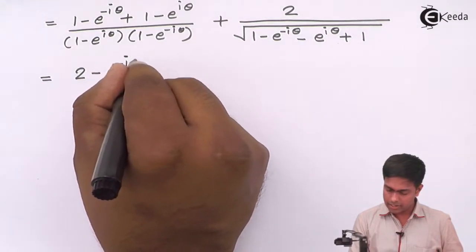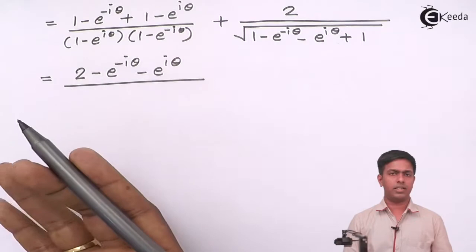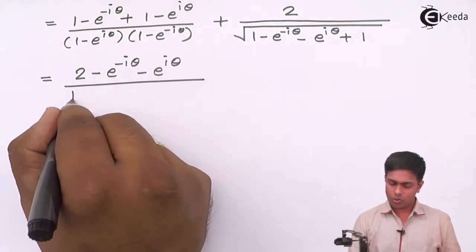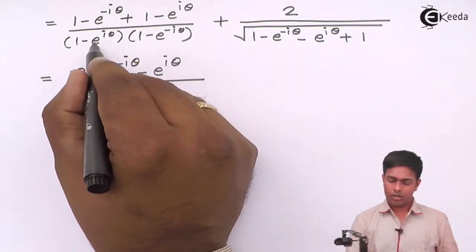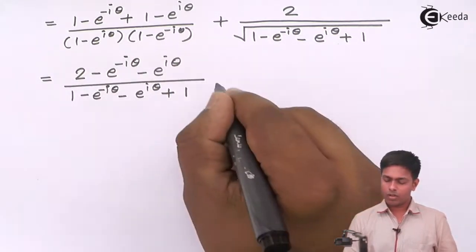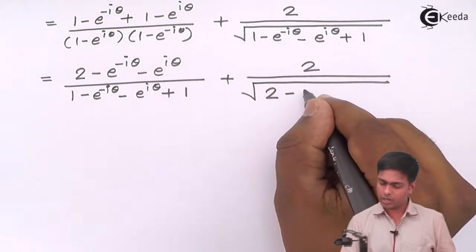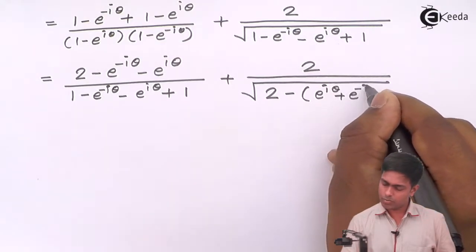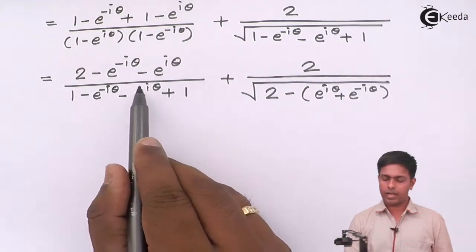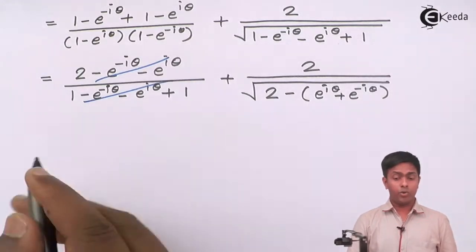So we have (2 - e^(-iθ) - e^(iθ)) in the numerator divided by the same expression in the denominator — they cancel! Again multiplying out the denominator under the square root: 1 - e^(-iθ) - e^(iθ) + 1 = 2 - (e^(iθ) + e^(-iθ)). So the full expression becomes 1 plus 2 over √(2 - (e^(iθ) + e^(-iθ))).